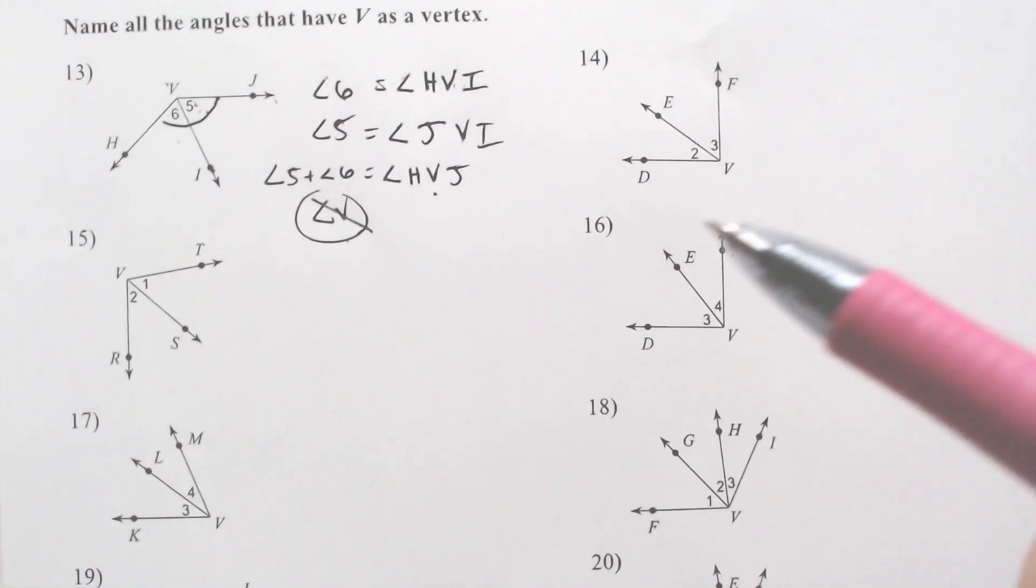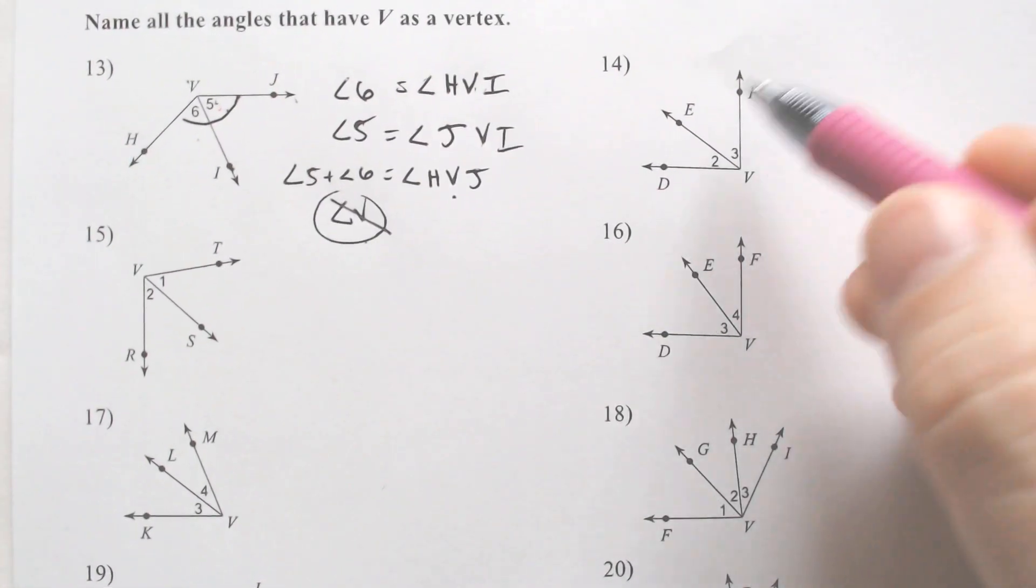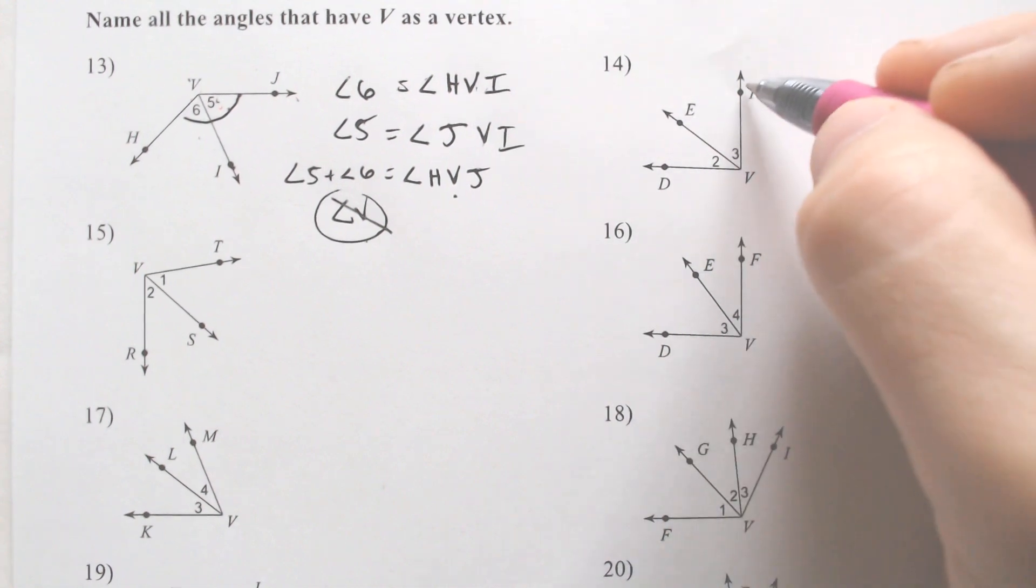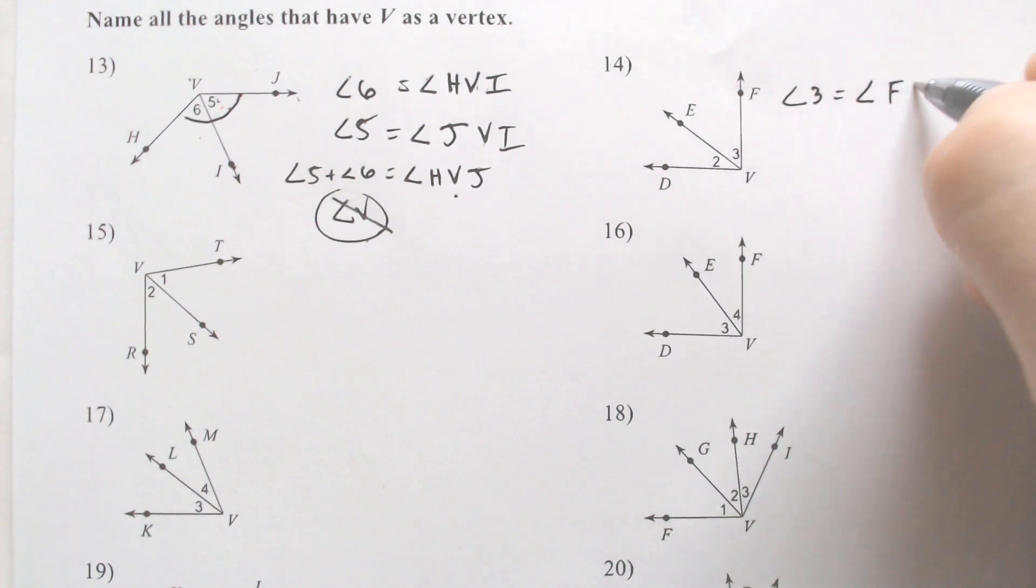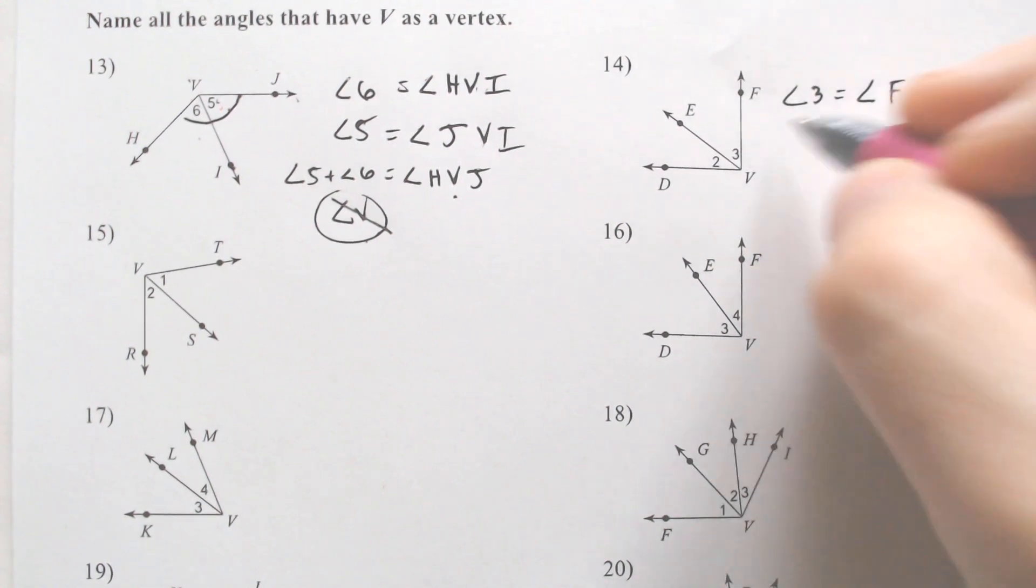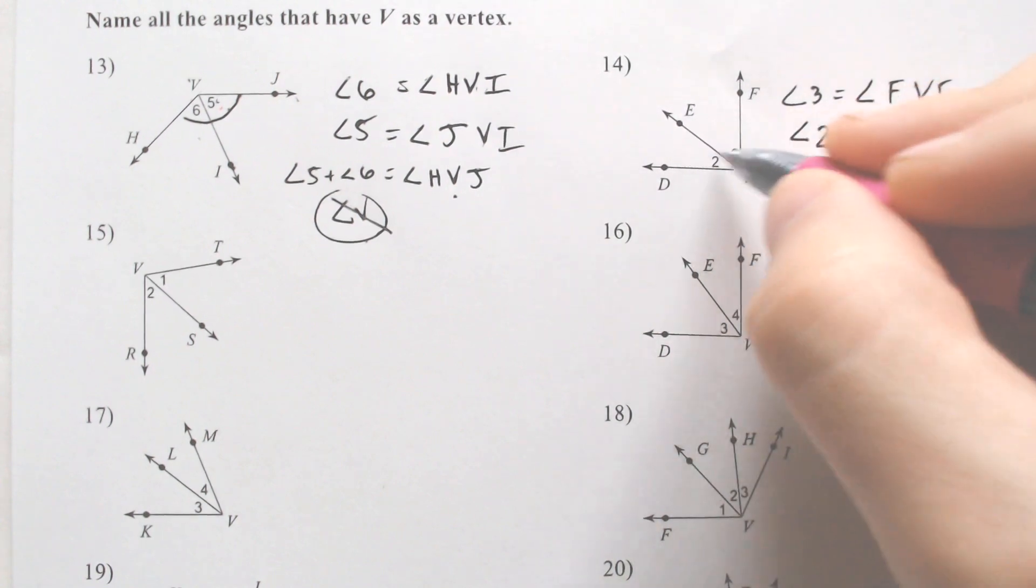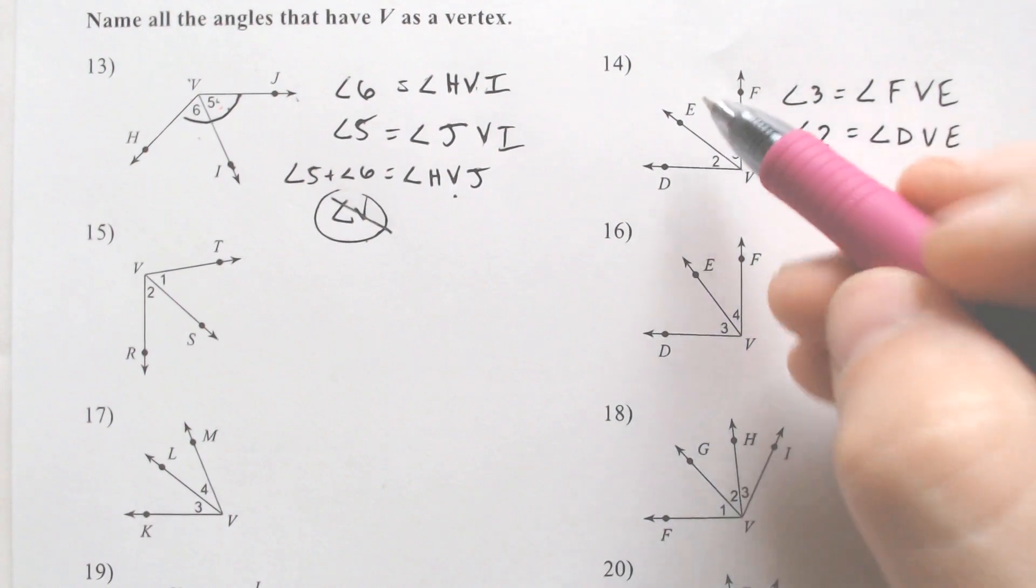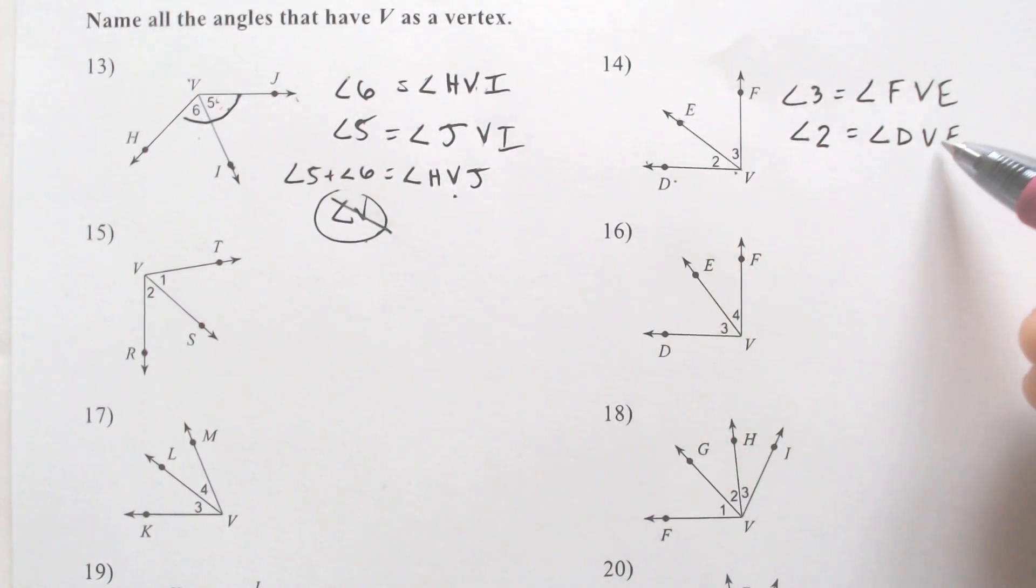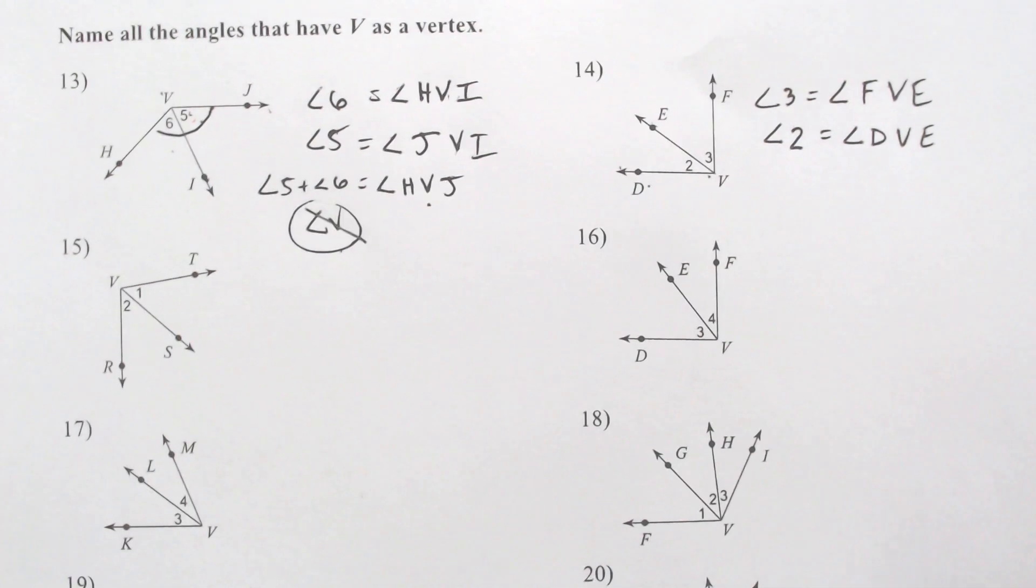So that's why we have to do it that way. So do another one of those. Let's do this one over here. We got angle 3 is equal to V in the middle, which would be angle V F E. And we would also have angle 2 has V in the middle, which would be equal to angle D V E. And, of course, again, you can say E V D. You don't have to do it in this order. You just have to make sure V is in the middle.